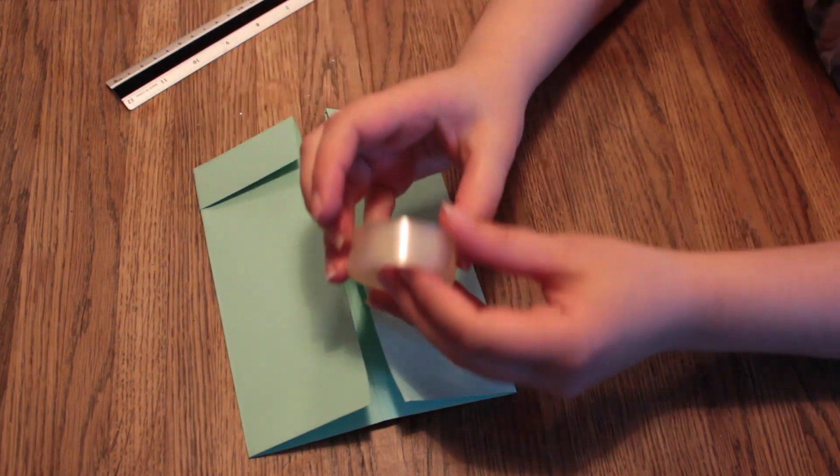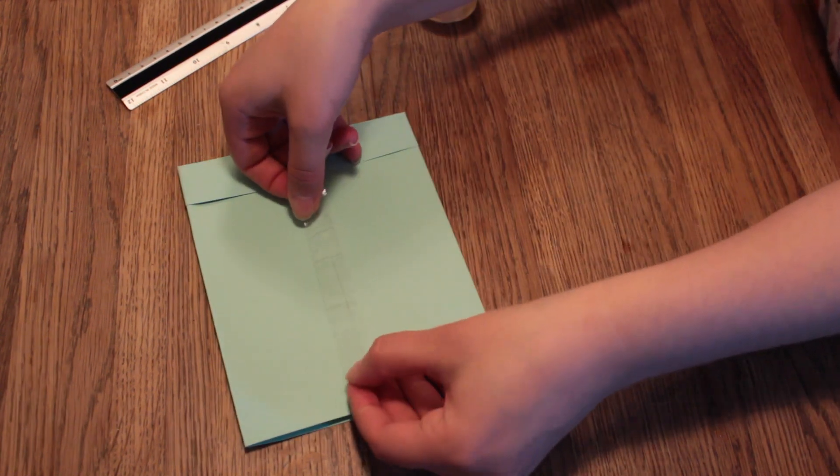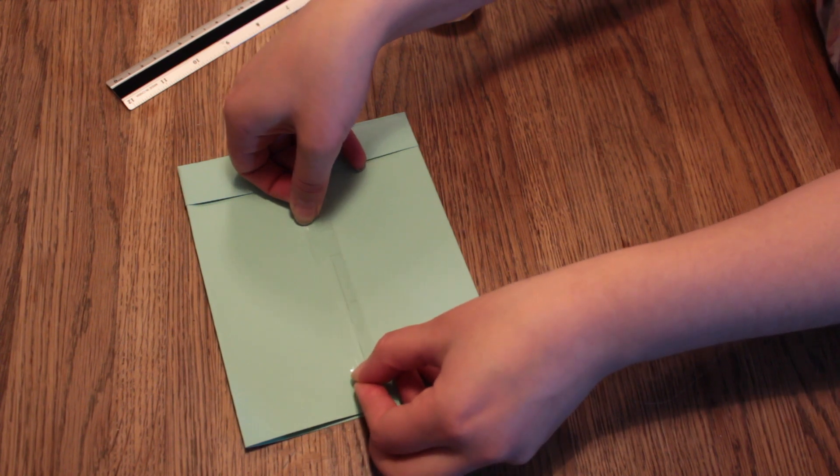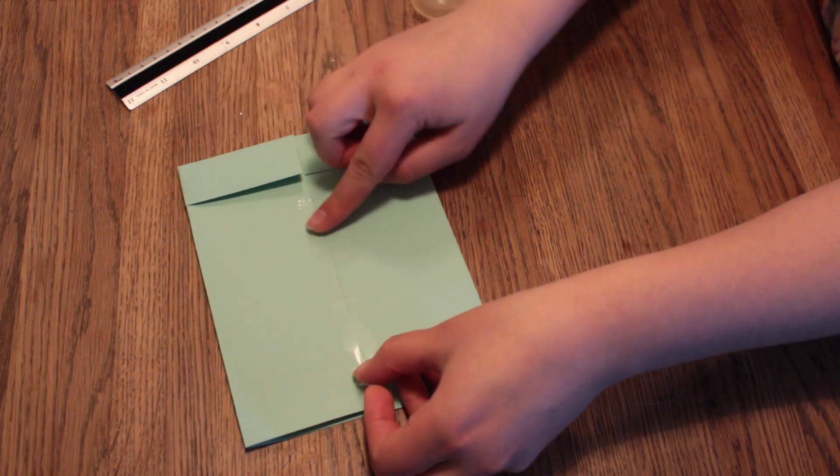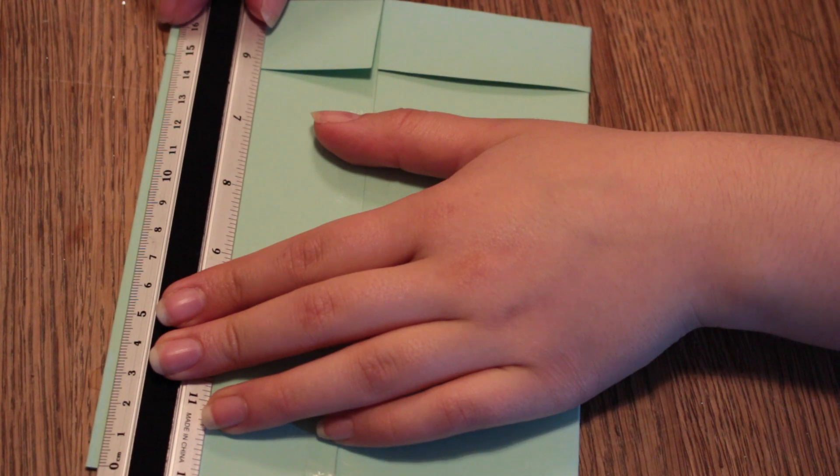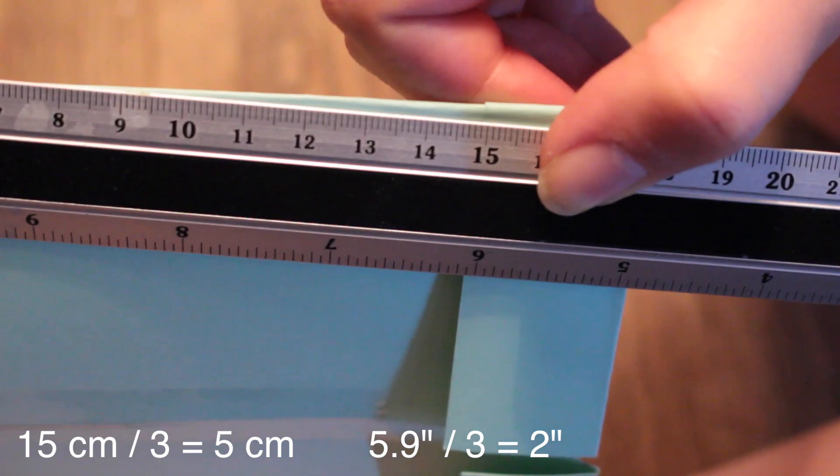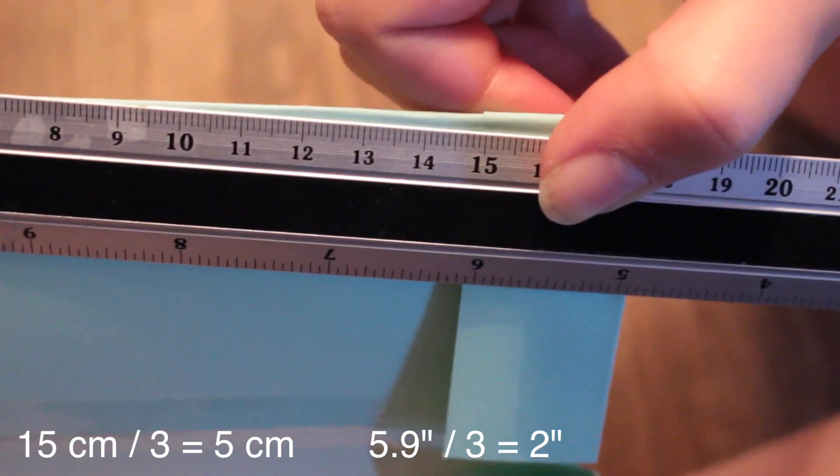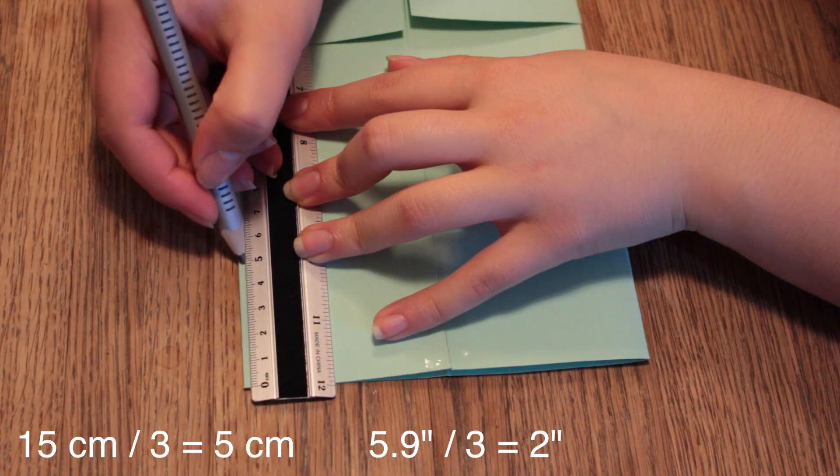Then take your tape and take a piece of it and put it right on the opening. Then take your ruler and measure from the folded edge down to the bottom. Mine measures 15 cm which will be divided by 3 which will help us mark and fold the next part.